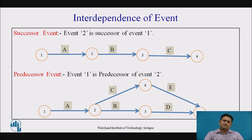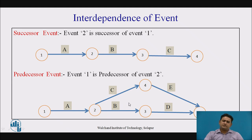Now interdependency of events. There is a successor event and a preceded event. In this particular network diagram, 2 is the successor event of 1, 3 is the successor event of 2, and 4 is the successor event of 3. Similarly, in the second network diagram, 1 is the predecessor of 2, 2 is the predecessor of 3 and 4, and 3 and 4 are the predecessors of event 5.